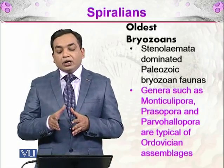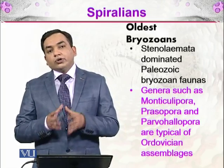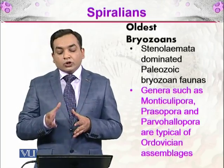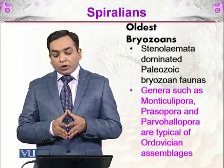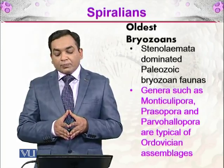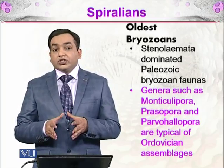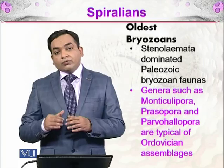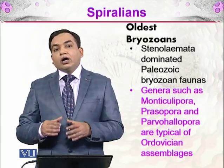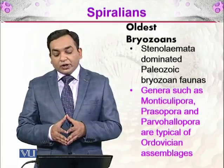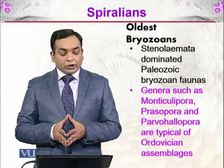The Stenolaemata dominated the Paleozoic bryozoan faunas. During the Paleozoic era, the Stenolaemata were present, and genera such as Monticulipora, Rasopora, and Parvohalopora are typical of the Ordovician assemblages. If we look at the stratigraphy of the Ordovician era, we will be able to see these groups of bryozoans there.